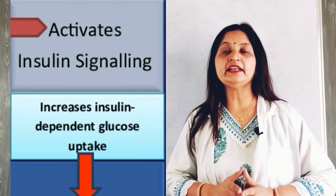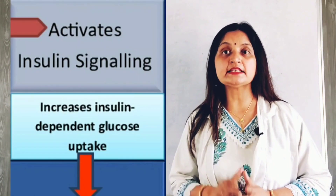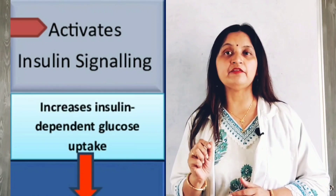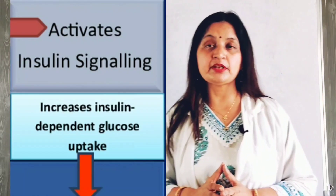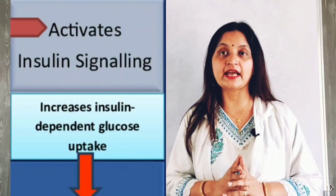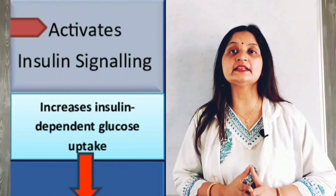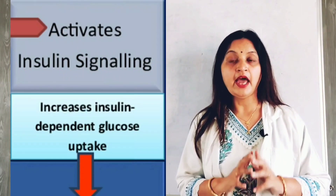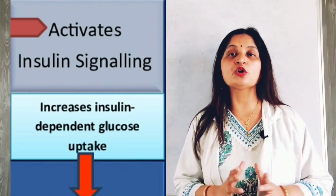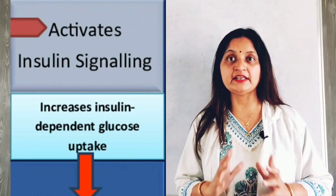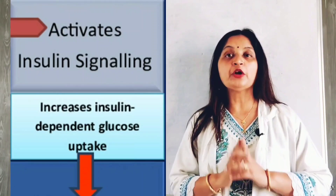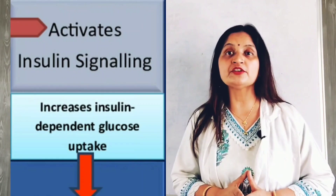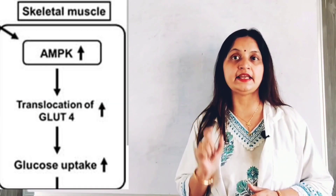Secondly, activated AMPK increases insulin activity. It increases the expression of insulin receptors on the surface of the hepatocyte, thereby increasing the insulin signaling mechanism. This promotes glucose utilization by various tissues including muscle and adipose tissue, and also inhibits gluconeogenesis because of increased insulin activity.